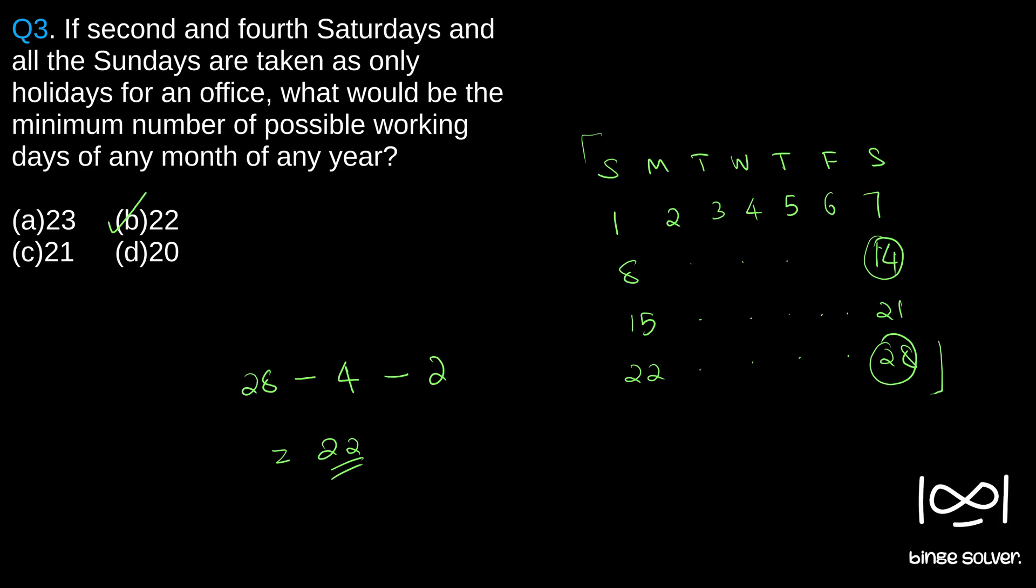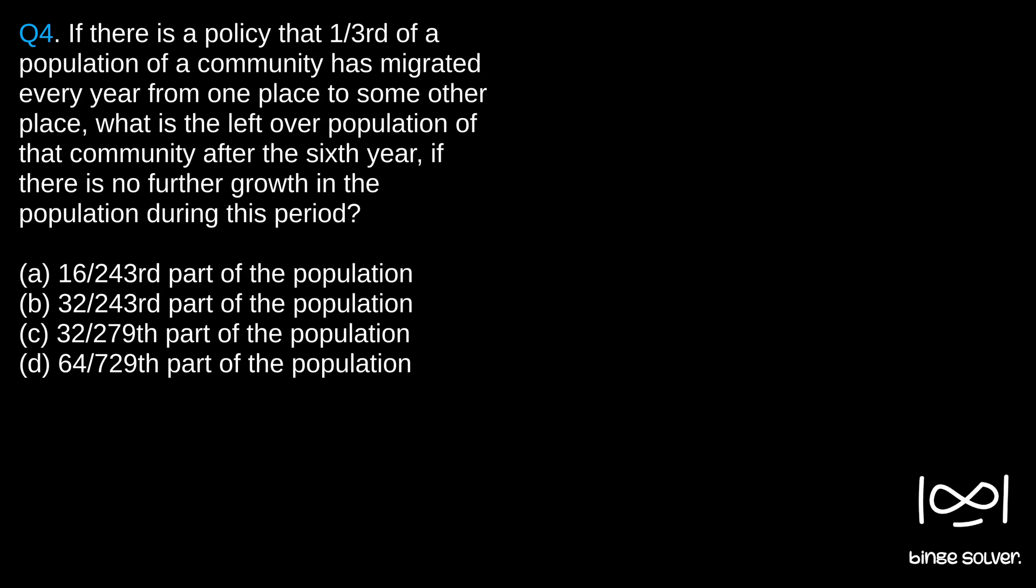Next question, question 4. If there is a policy that one-third of a population of a community has migrated every year from one place to some other place, what is the leftover population of that community after the sixth year if there is no further growth in the population during this period?